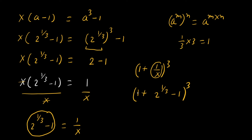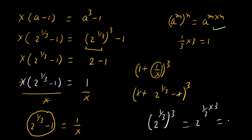The +1 and -1 cancel out, leaving (2^(1/3))³. Applying the exponent rule, 1/3 multiplied by 3 gives 1, so we get 2¹ = 2. Our final answer is 2.